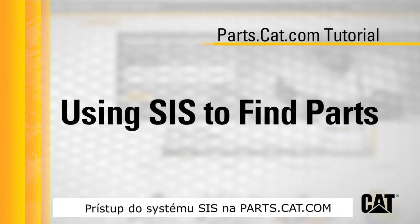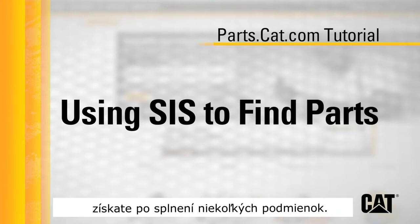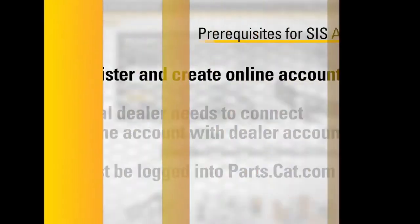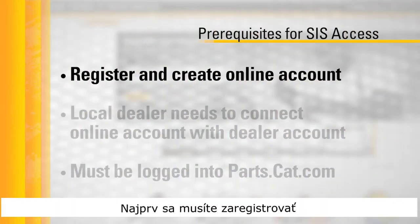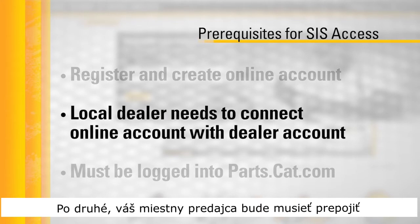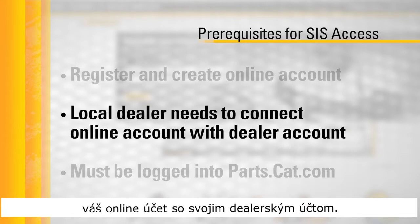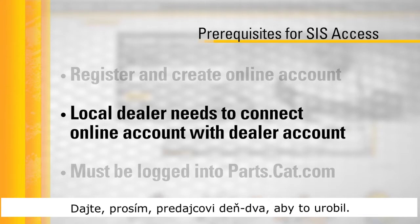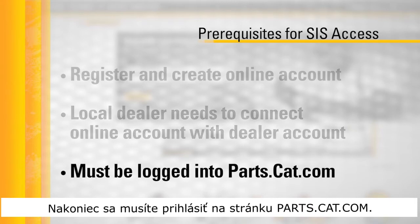There are several prerequisites that must exist for you to be able to access Sys from Parts.cat.com. First, you must register and create an online account on Parts.cat.com. Second, your local dealer will need to connect your online account with your dealer account — please allow your dealer a day to do this. Finally, you must be logged into the Parts.cat.com site.